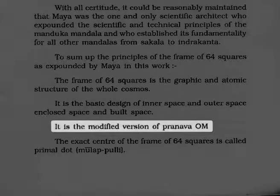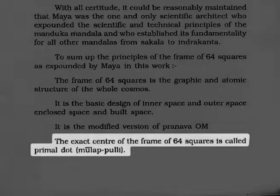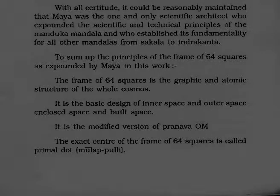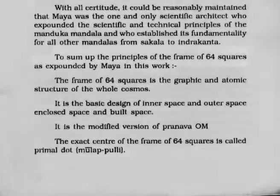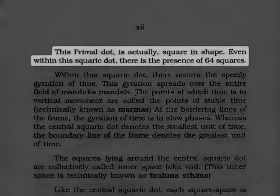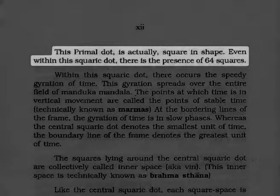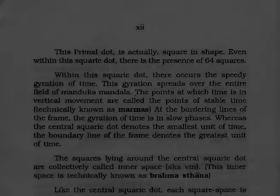It is the modified version of Pranava Ohm. The exact center of the frame of 64 squares is called the primal dot — again, a fair description of singularity. This primal dot is actually square in shape. Even within this square dot, there is the presence of 64 squares. This is a perfect description of a fractal recursive structure.